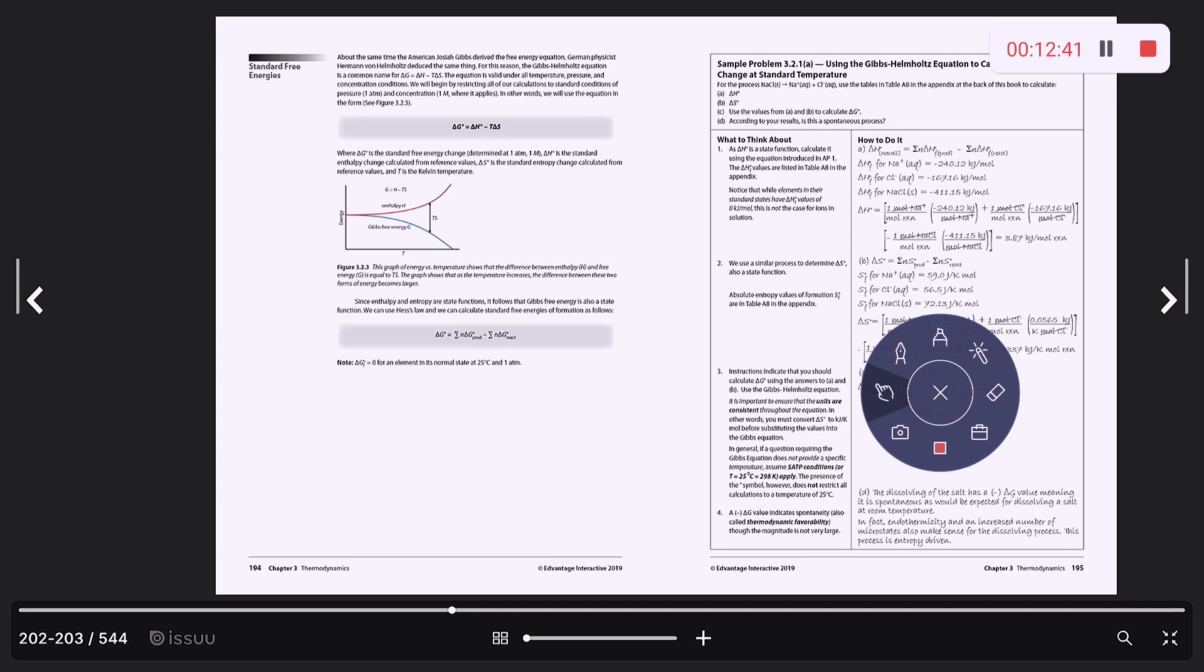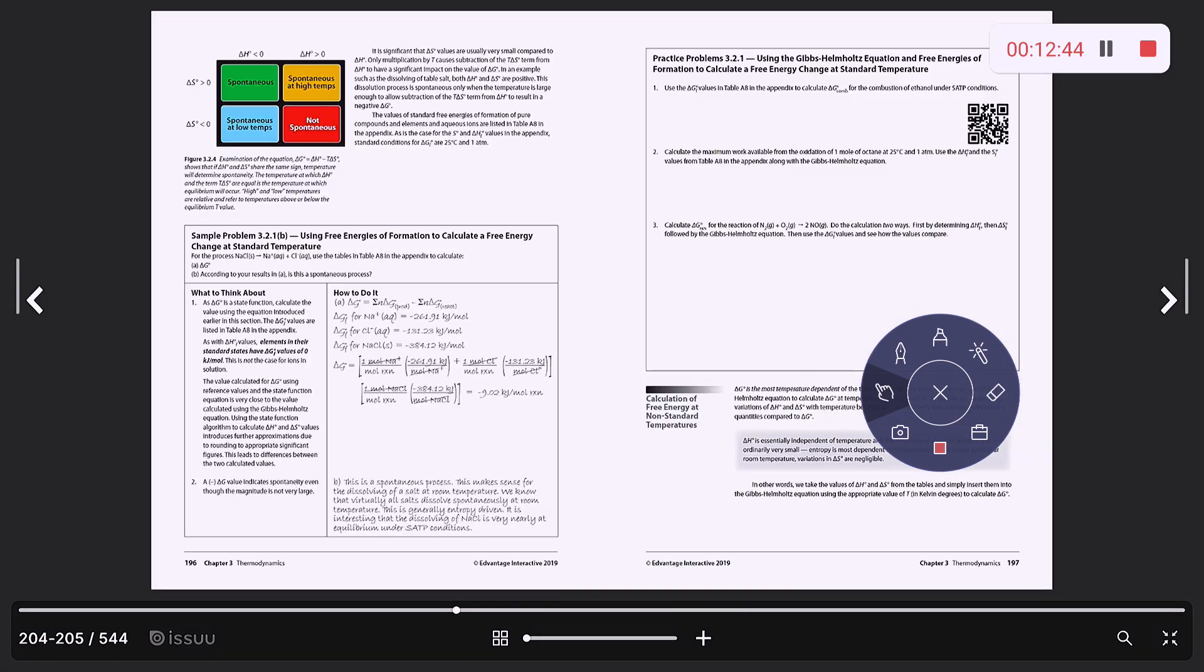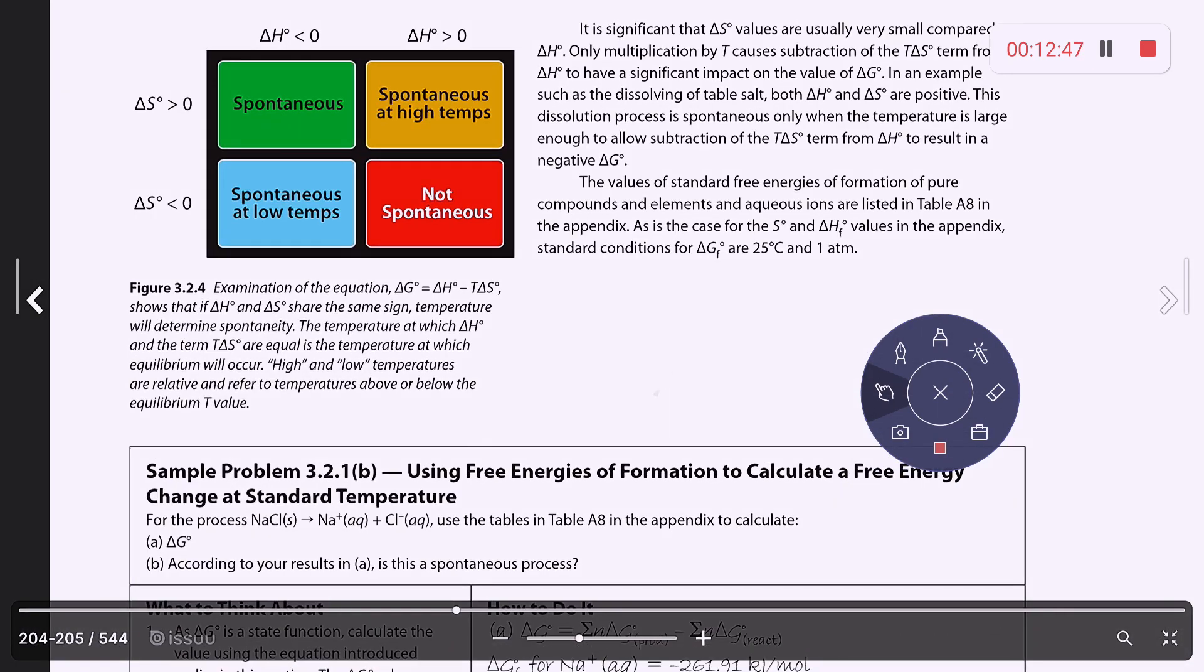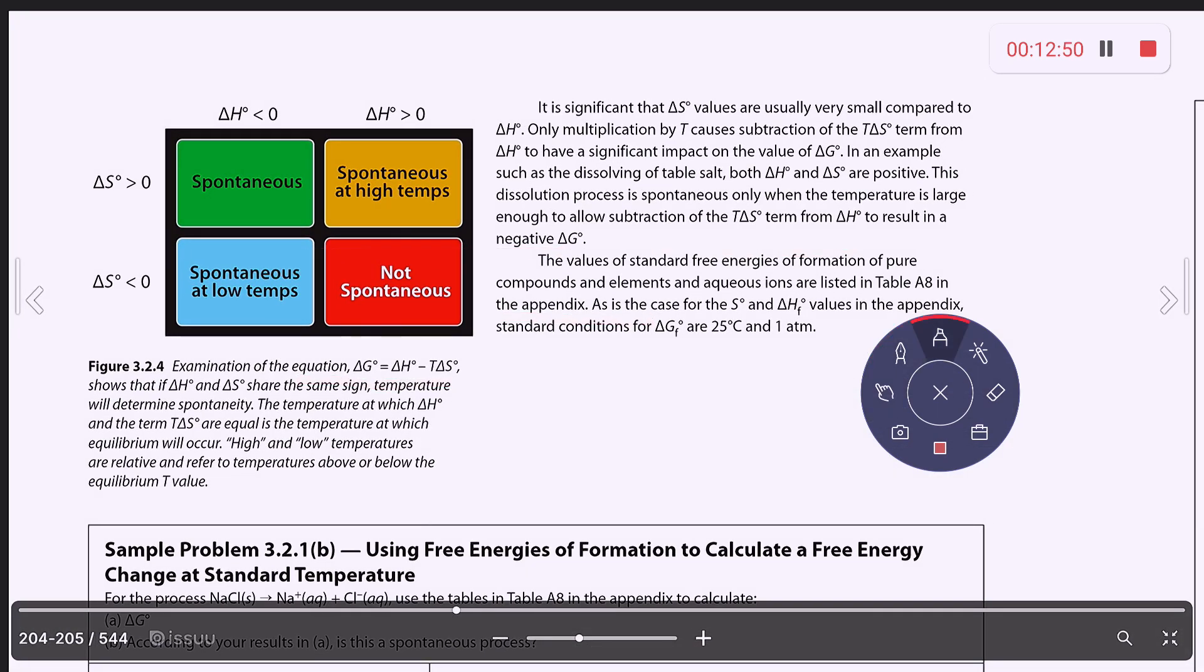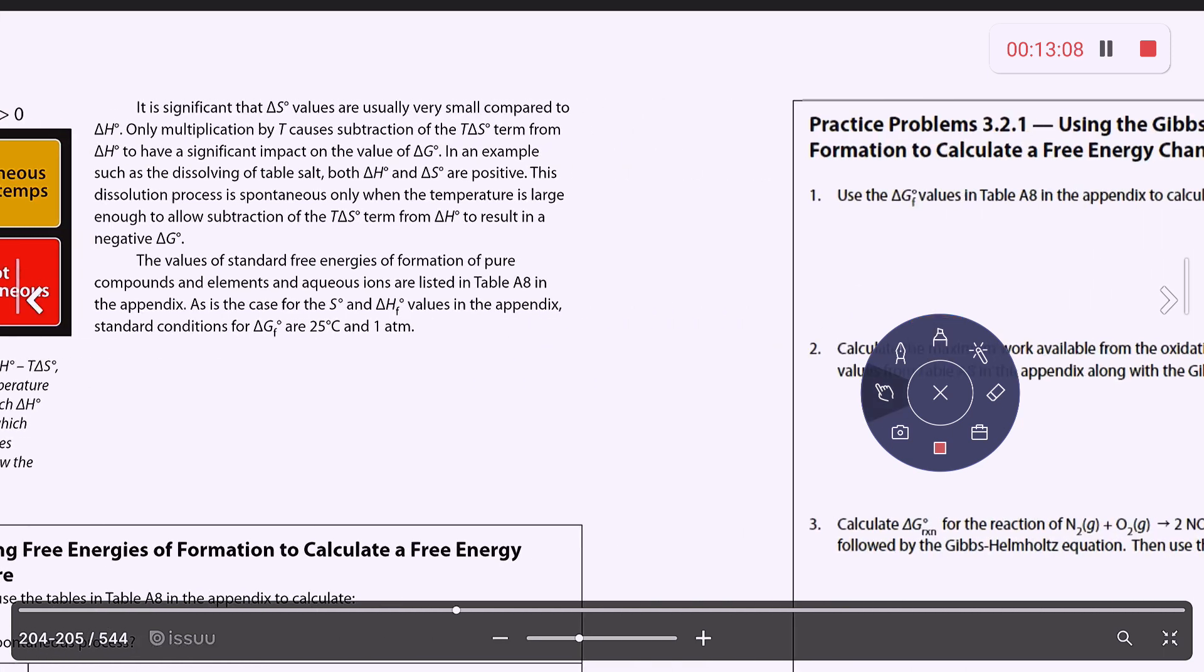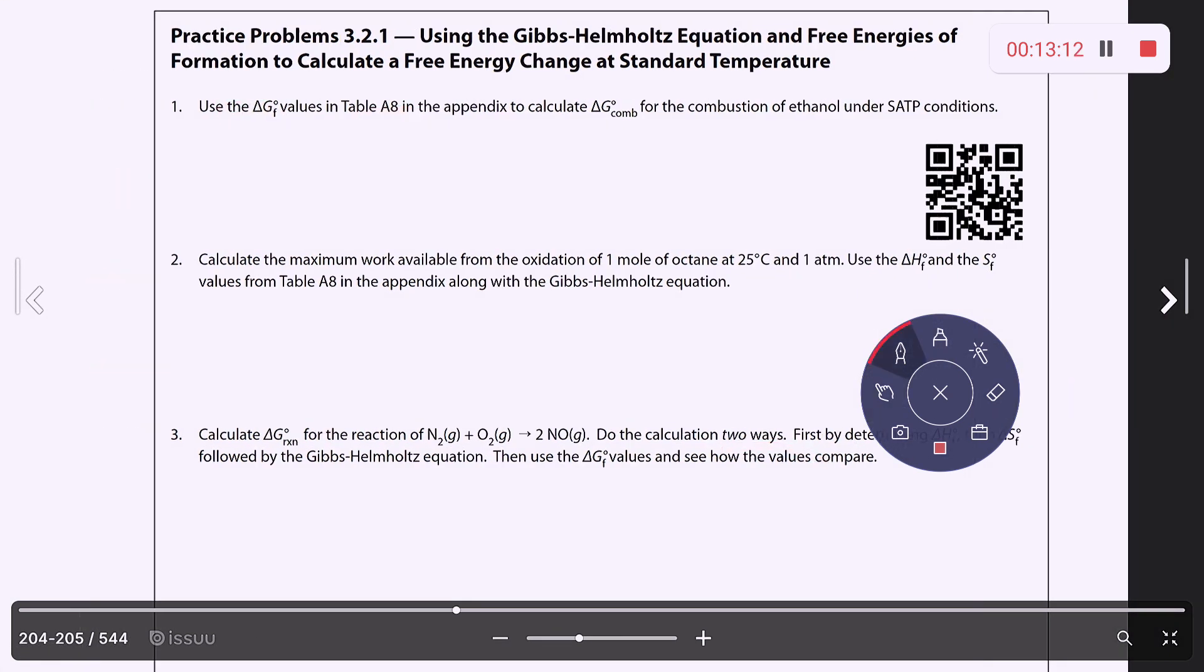I would definitely understand how this figure is relating spontaneous and non-spontaneous reactions based upon your standard entropy and enthalpy values. So I'm just making that note and then let's turn to the practice problems on the next page. So here what we're doing is we're going to use the values in the back of the book to calculate the Gibbs free energy. And I'm going to stop this video and start a new one.